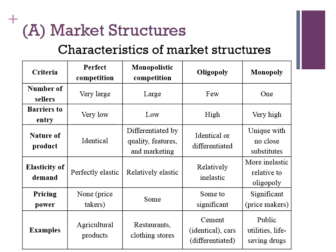What about elasticity of demand? In this case, tomatoes are perfect substitutes for each other, so we have perfectly elastic demand. What about pricing power? The sellers in perfect competition are price takers — they take the market price as it is, as they cannot influence the market price. For example, agricultural products.